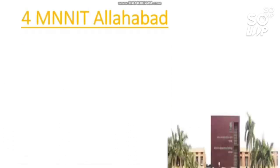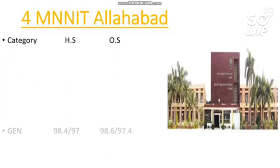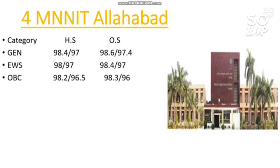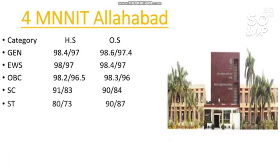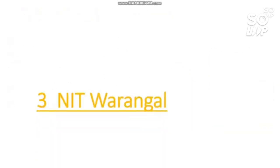Number four is MNNIT Allahabad. Mechanical cutoffs: General 98.6, EWS 98.4, OBC 98.3, SC 90 percentile, and ST 90 percentile required.